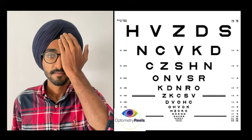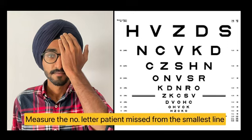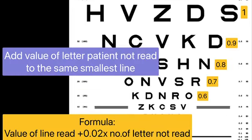During the test, record the number of letters not read by the person from the smallest line that he was reading. Then you can apply the formula to get the LogMAR acuity. For the formula, you need to add the value that patient has missed to the same line that he was reading.